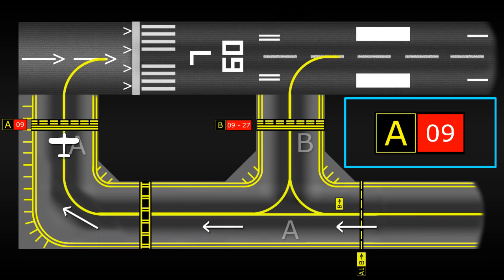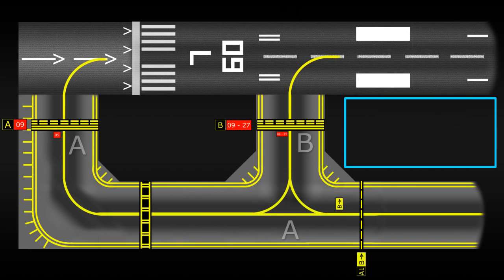A location sign showing Alpha and a single runway number, 09. Like taxiway signs, these signs may also be painted on the ground.